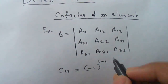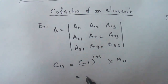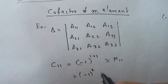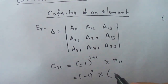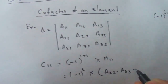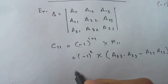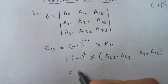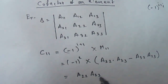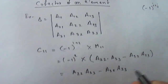So c11 = (−1)^(1+1) × m11 = (−1)^2 × (a22 × a33 − a32 × a23). Since (−1)^2 = +1, the cofactor c11 equals a22 × a33 − a32 × a23.